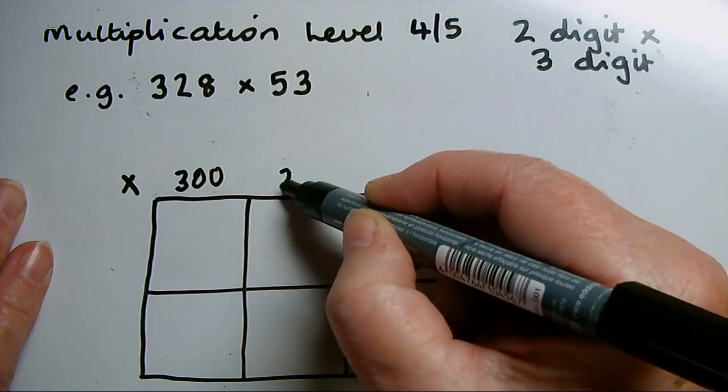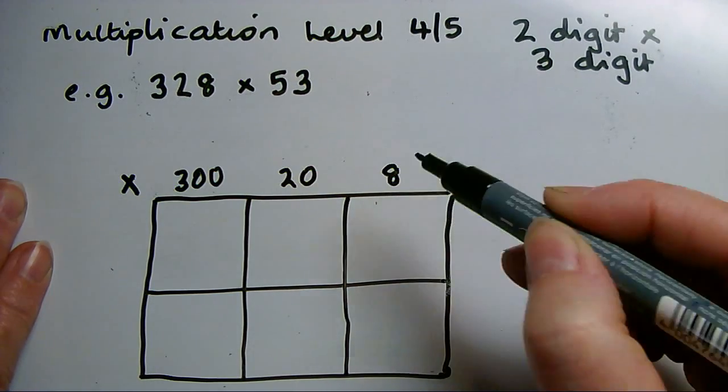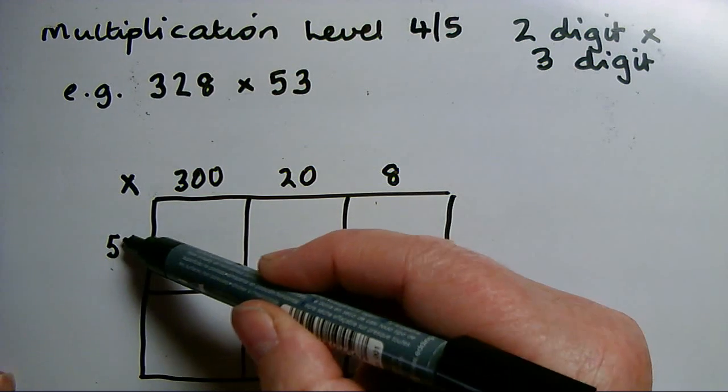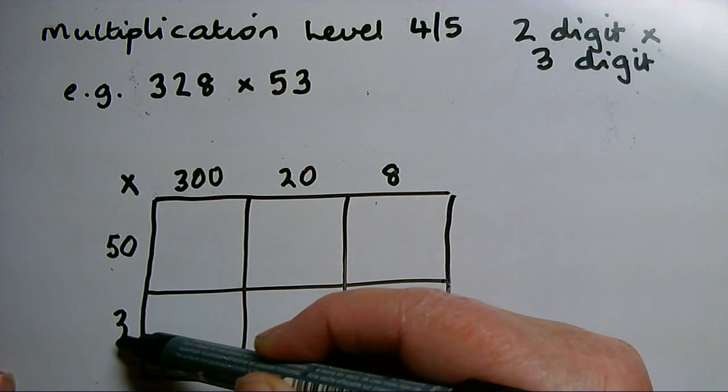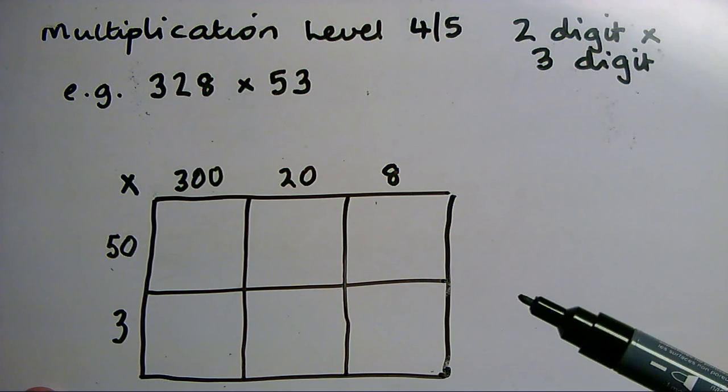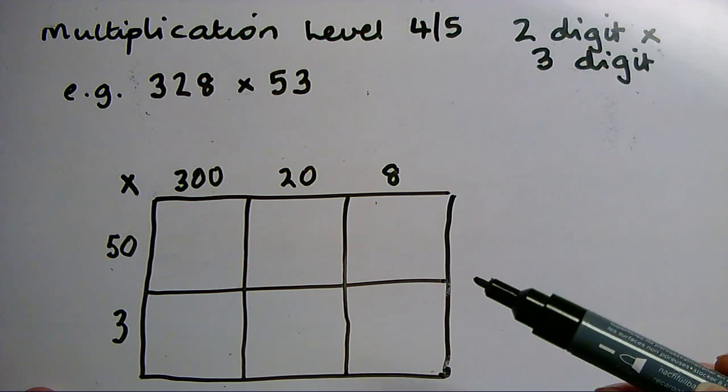I write 300, 20 there, and 8 units on the end. And down the side, 5 tens—50—and 3 units. I need to make sure when I'm doing the multiplying that I don't lose track of the zeros on the ends of the numbers.